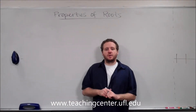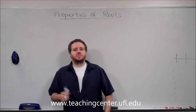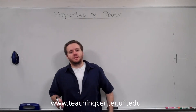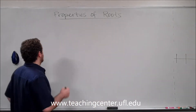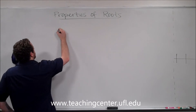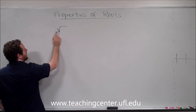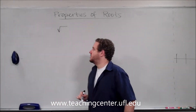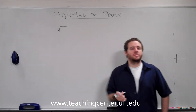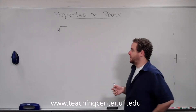In this video I'm going to go over some properties of roots — just some basic things that you can apply to most problems. Remember that a root symbol looks like this, and it could have a number on the left side. If there's no number, that means it's a square root; if there's a number, it means it's an nth root, where n is that number.